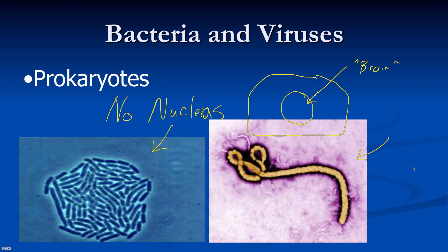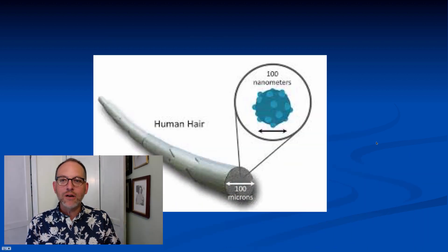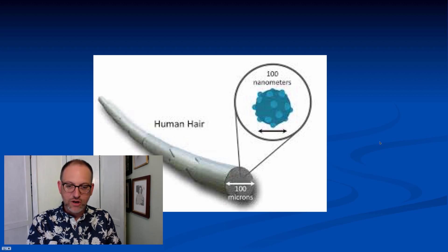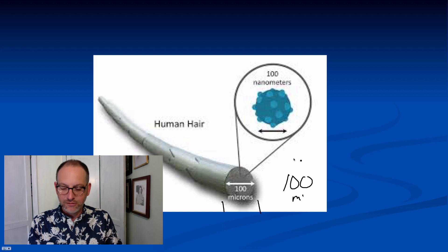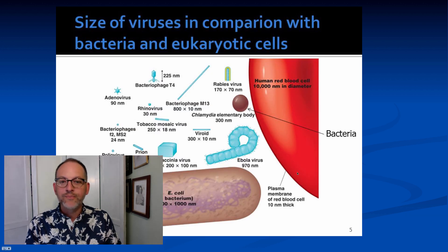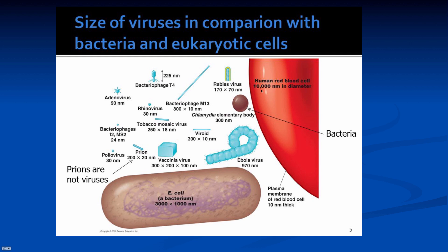Since they do not have a nucleus, they are called prokaryotes. Now let's talk about sizes. We have a human hair listed here as 100 microns, which is 100 micrometers — a thousandth of a millimeter. A human red blood cell is 10,000 nanometers, which comes out to 10 microns.